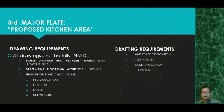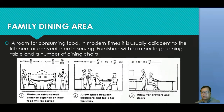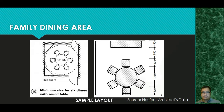Now let's move into the discussion of the dining area. A dining area is a room for consuming food; in modern times it is usually adjacent to the kitchen for convenience, and furnished with a rather large dining table and a number of dining chairs. You can also find sample layouts in the Neufert Architects' Data book. I think most of you already have a copy — please study it, as it is very useful not only in Design One but as you go along with your higher designs.